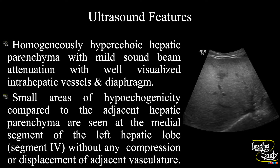In summary, hepatic parenchymal echogenicity is homogeneously increased with mild sound attenuation, with well-visualized intrahepatic vessels and diaphragm. Small areas of hypoechogenicity compared to the adjacent echogenic hepatic parenchyma are seen at the medial segment of the left hepatic lobe, known as segment 4, without any compression or displacement of the adjacent vasculature. This feature is suggestive of focal fat sparing.